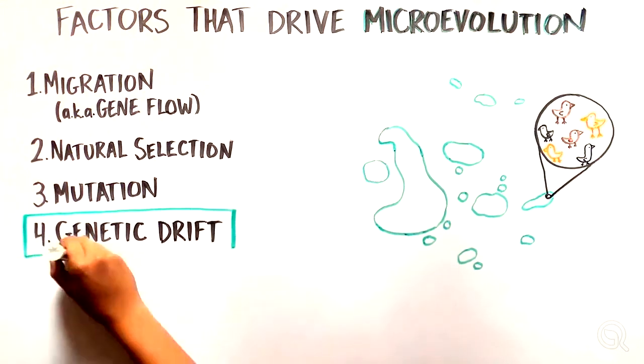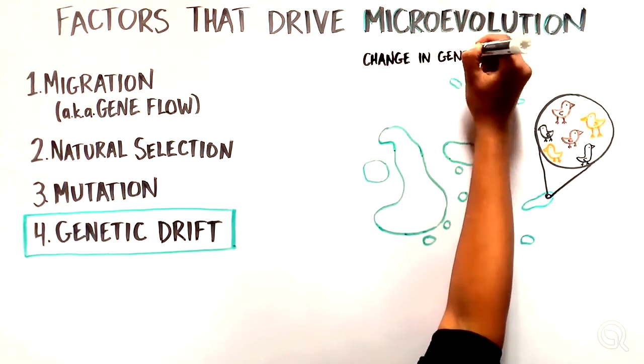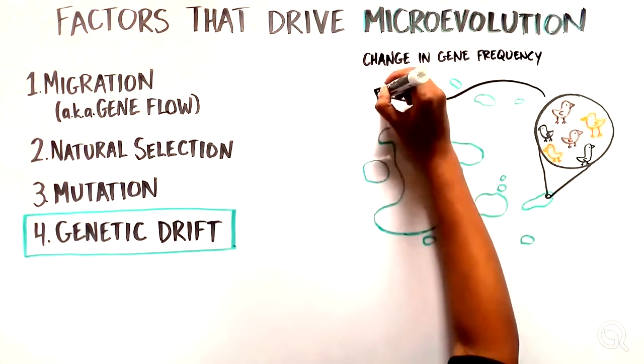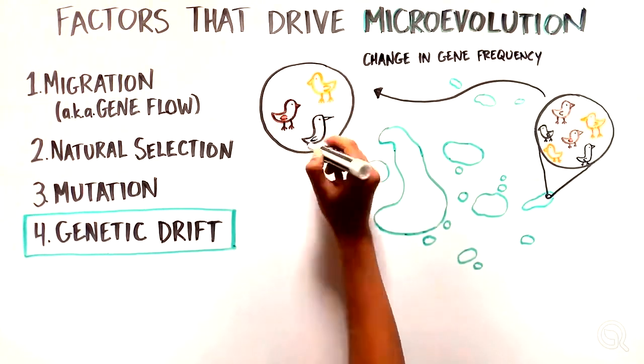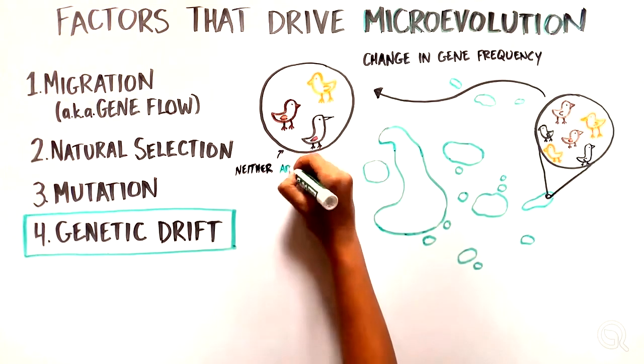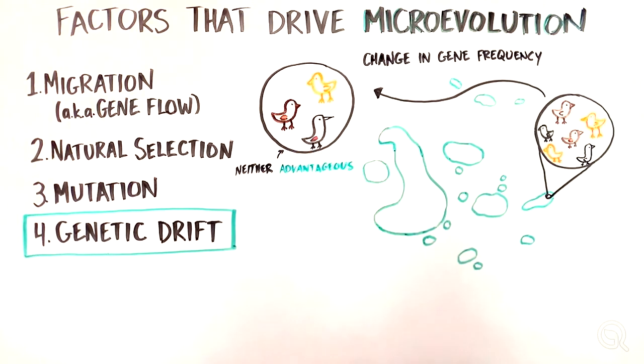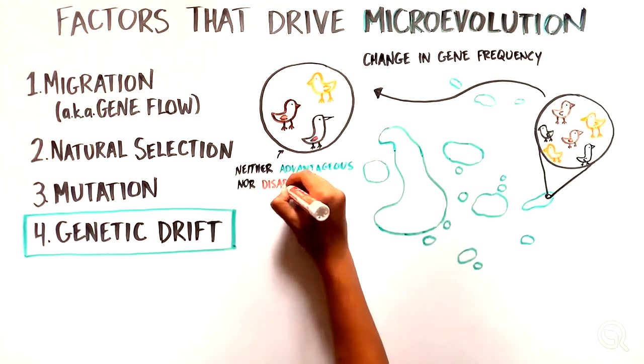And lastly, evolution can occur through random genetic drift, which refers to change in frequency of a gene variant in the population over time by chance, meaning that genetic drift does not take into account whether the gene variant is advantageous or disadvantageous.